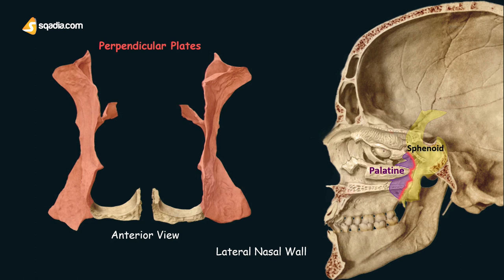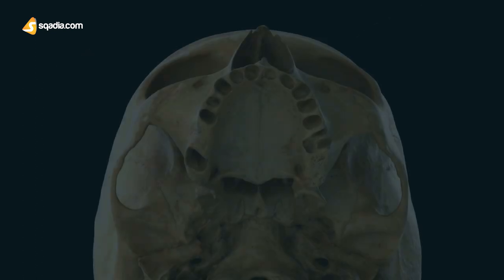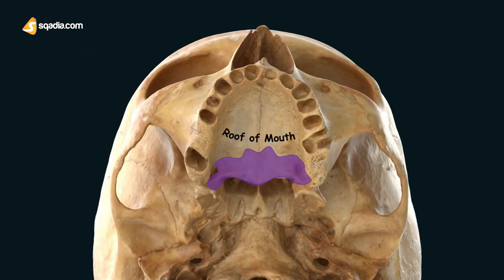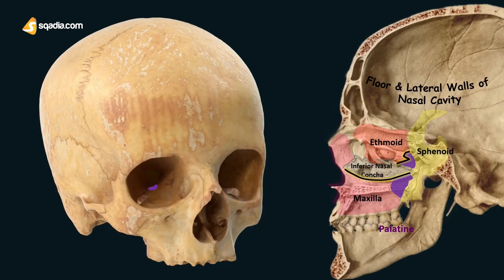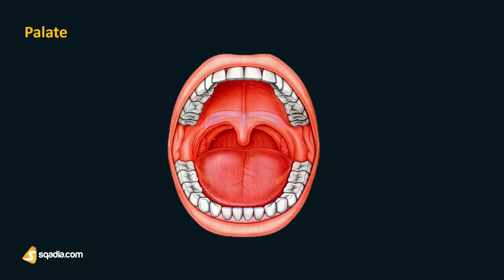On the upper border this bone helps form the base of the orbital process. The palatine bones contribute to the walls of three cavities: first the roof of the mouth, the floor and the lateral walls of the nasal cavity, and then the floor of the orbits or the eye sockets. The roof of the oral cavity and the floor of the nasal cavity together make up the palate, which separates the oral and the nasal cavities.